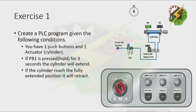You have one push button and one actuator. If PB1 is pressed for 3 seconds, the cylinder will extend. If the cylinder reaches the fully extended position, it will retract.